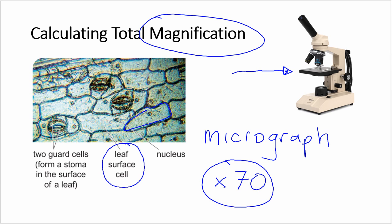In other words, these cells have been magnified 70 times using the microscope. Now we're going to look at how you actually work that out.